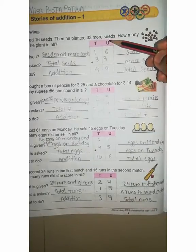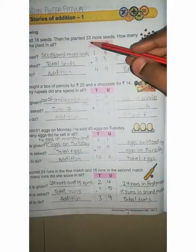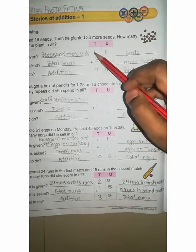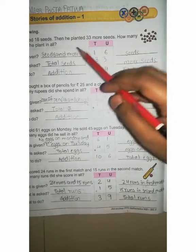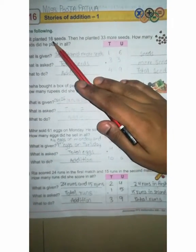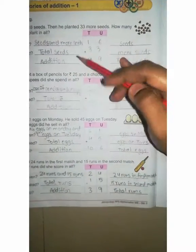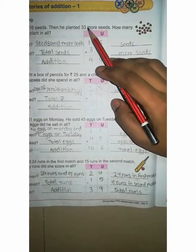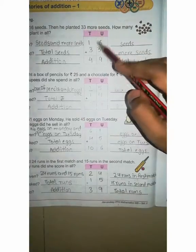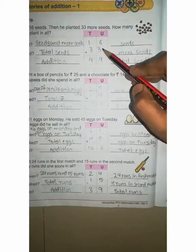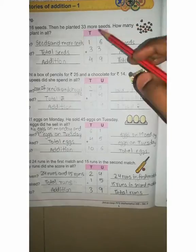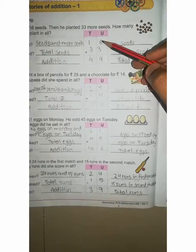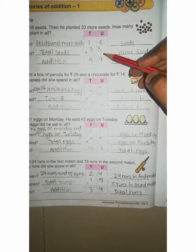Now you can see. The first line you can write we are given 16 seeds, right, 16 seeds. Next 33 more seeds asking, right, plus 33 more seeds. 6 plus 3 how much? 9, write down 9. 1 plus 3 how much? 4. 49 total seeds, 49. Understand number one question?